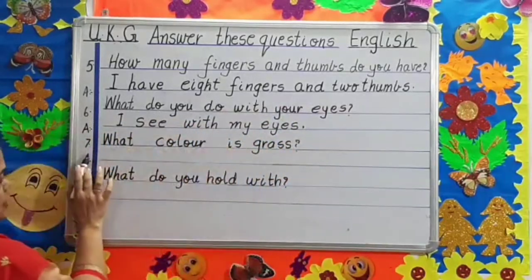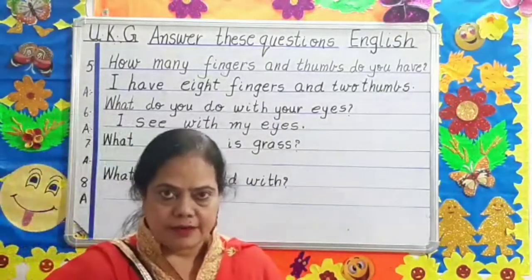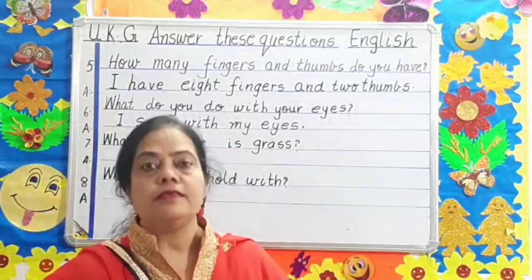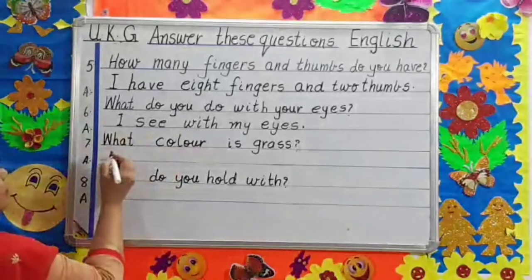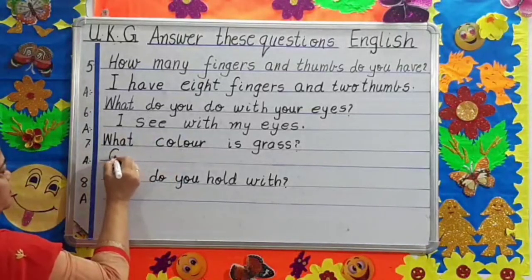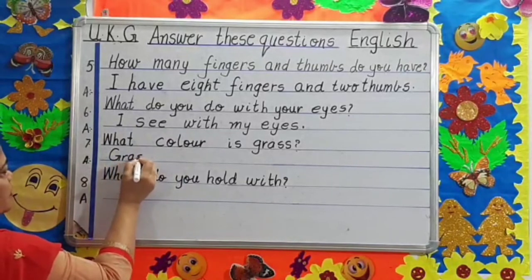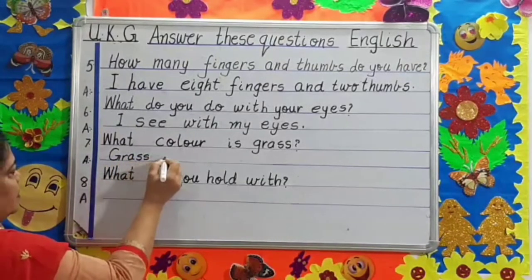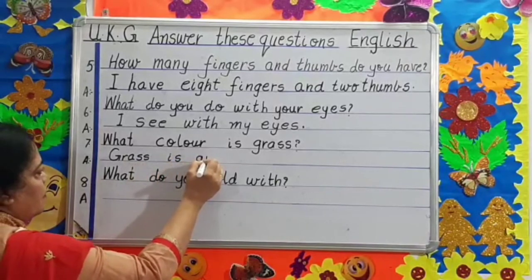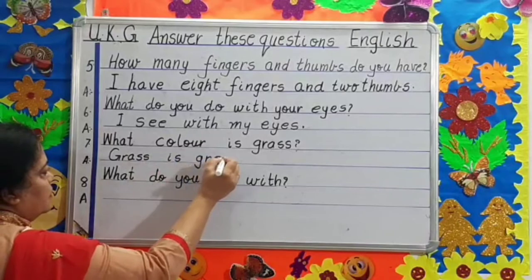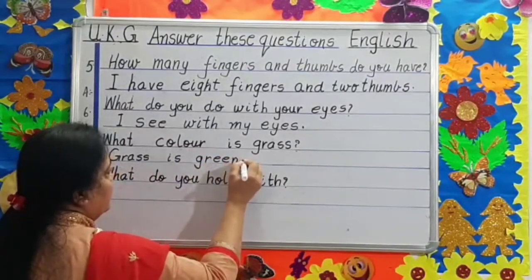Question number seven. What color is grass, children? What color is grass? Grass is green. G, capital. Grass is green. We will stop.